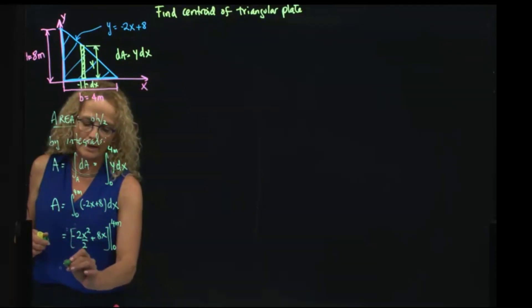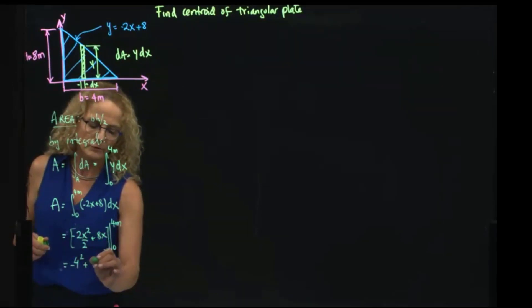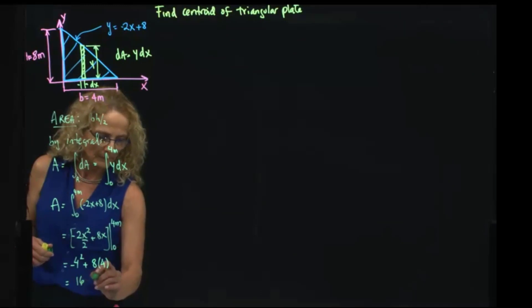If I evaluate that, I get negative 4 squared plus 8 times 4, and that gives me equals to 16 meters squared.